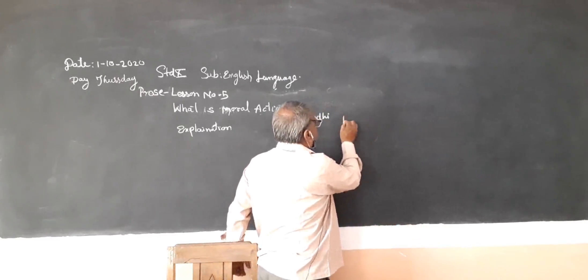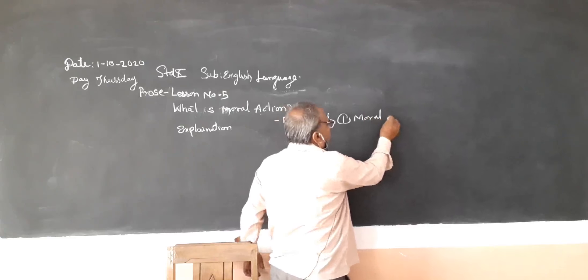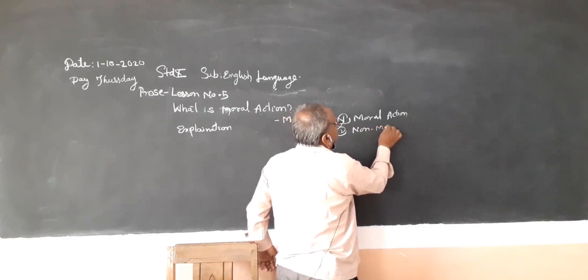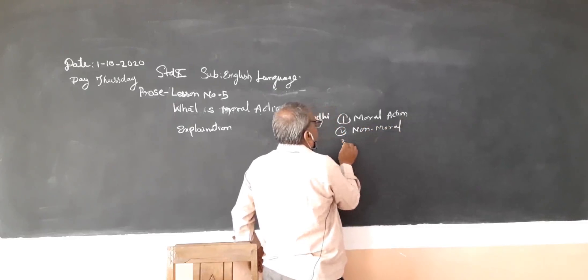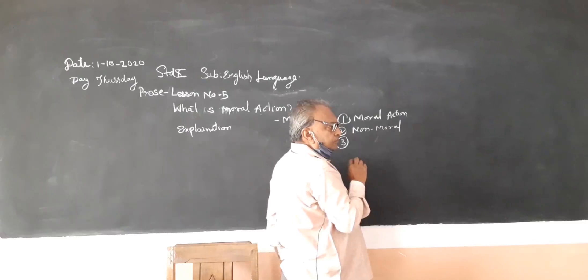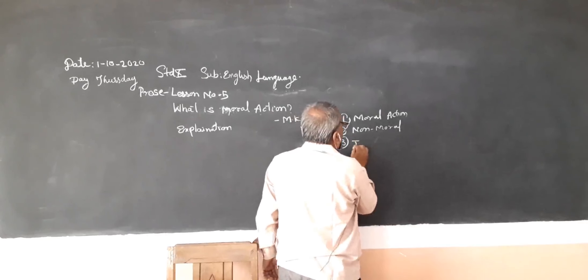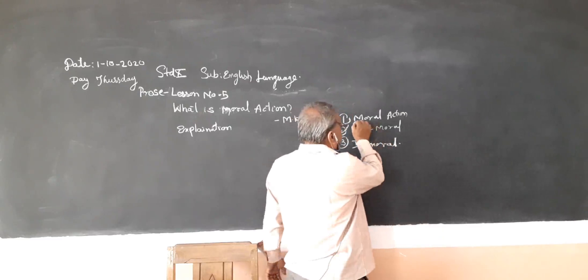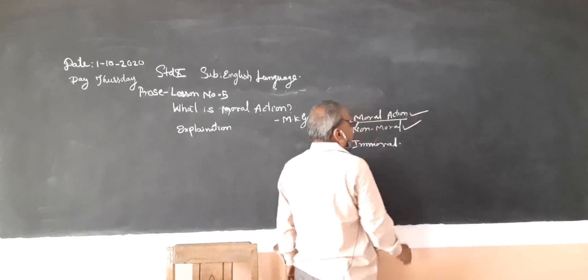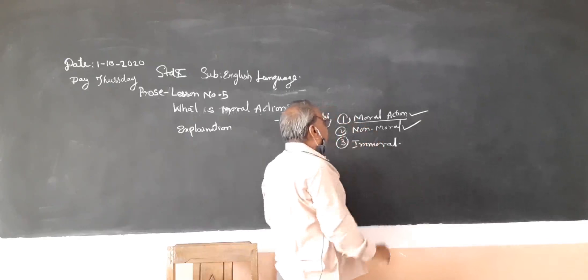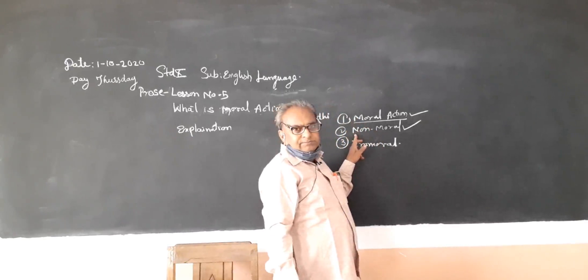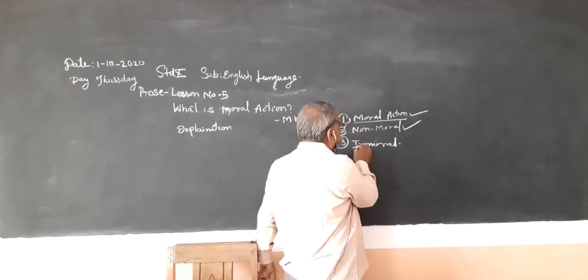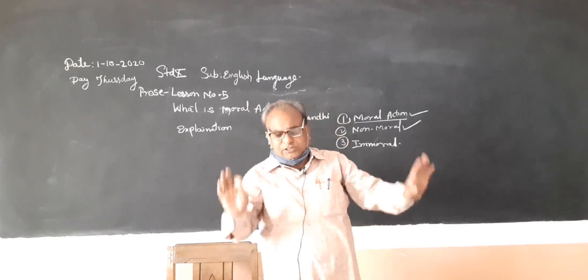That is one: moral action. Second: non-moral moral action. And third is immoral. Moral action is different. Non-moral action is different. But in these both cases, in moral and non-moral action, you won't find any bad behavior of a person here. But whereas in immoral, the man is totally immoral, a shameless person what we can call him.